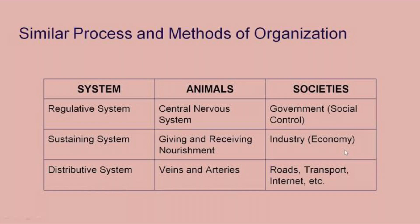Also, animals have an area or a system that receives nourishment — this could be their stomach — which is what sustains them. But in society, we have industries, so people can go out to get jobs in order to get money and survive. We also have veins and arteries, which distribute blood around the organs of the animal. In society, we have roads, transport systems, and the internet, that connect different parts together and help us move from one place to another. This is how he likened animals to society.